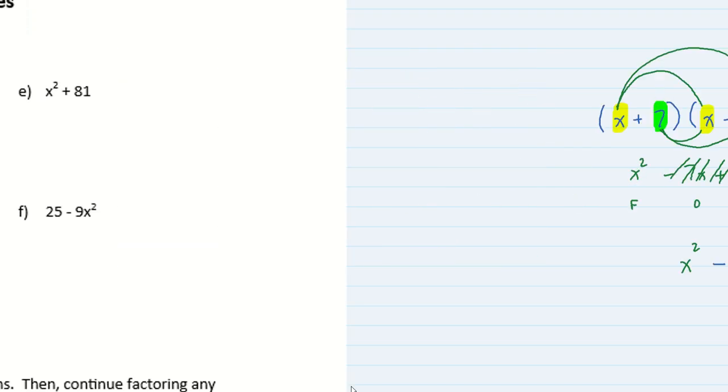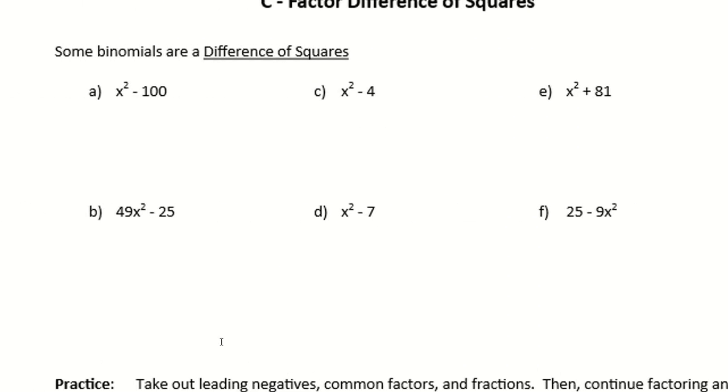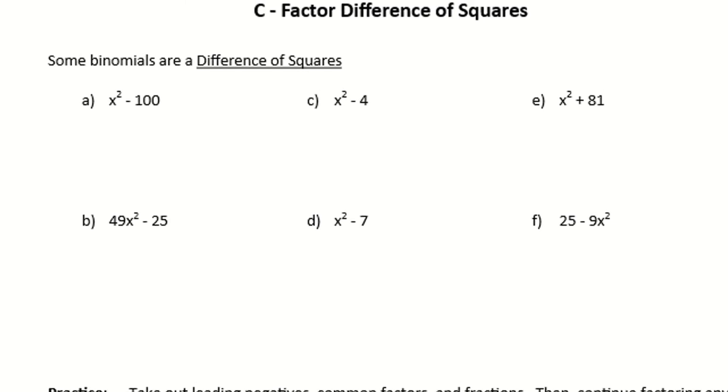So when it comes to factoring, if you encounter a binomial that is a difference of two squares - for example, perfect square, perfect square, and a difference in the middle - then you know that you must have had two binomials that are exactly the same. x times x, 10 times 10 gives you the end. One of them will be plus, and one of them is going to be minus.